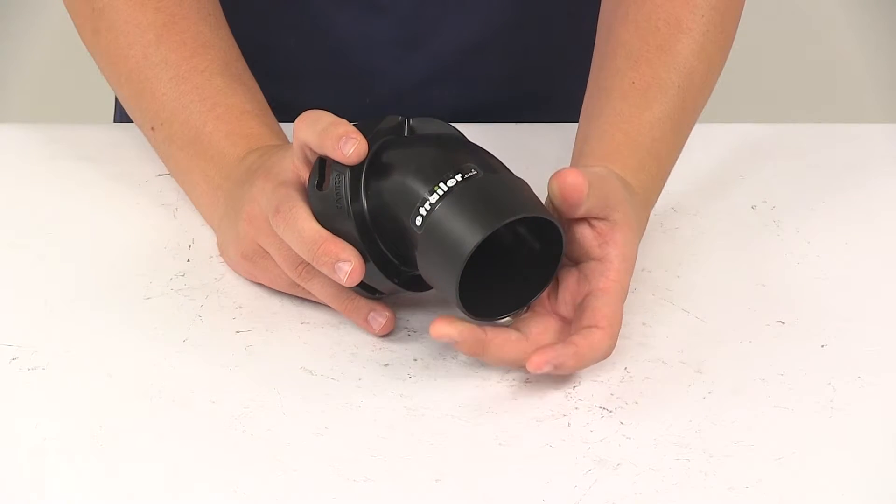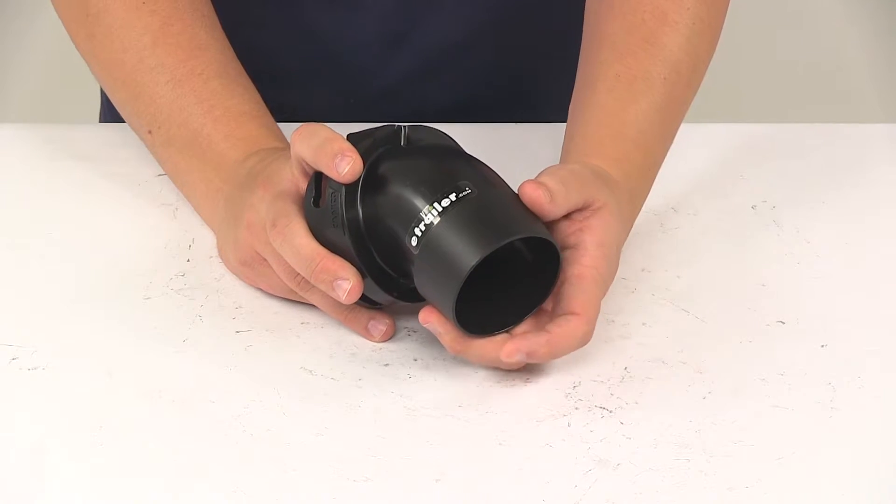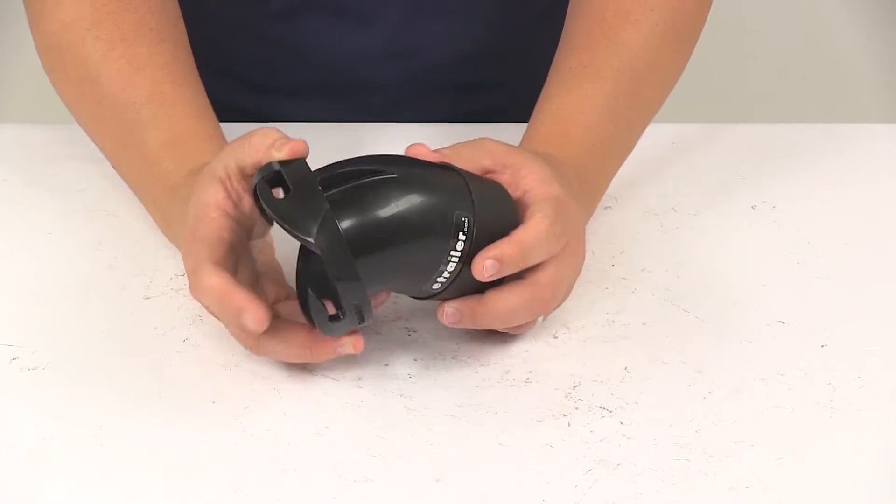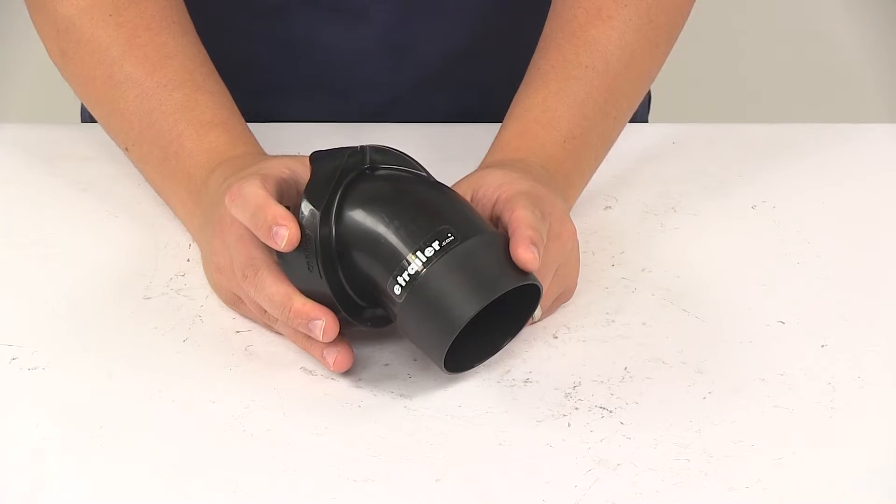Adding a clamp is going to provide an even more secure connection. Clamps are sold separately. This is designed to fit all three inch sewer hoses.